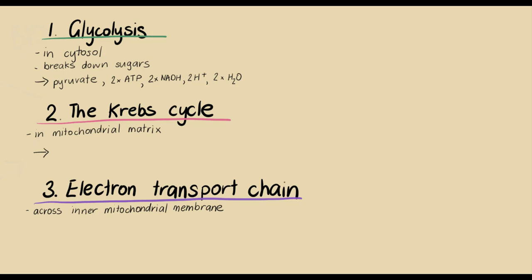The results of the Krebs cycle are two more ATP, as well as eight NADH molecules, two FADH2 molecules, and six carbon dioxide molecules. In the electron transport chain,